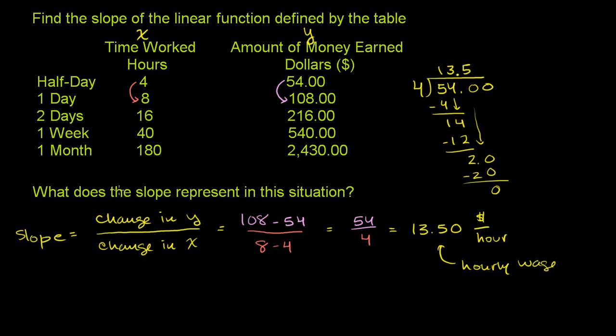And we didn't even have to take two data points. We could have said if we work four hours, we make $54. 54 divided by 4 is $13.50. Or if we work 8 hours, we get $108. 108 divided by 8 is $13.50. So you didn't even have to take two data points here. You could have just taken any of these numbers and divided by any of these numbers, but hopefully we also learned a little bit about what slope is.